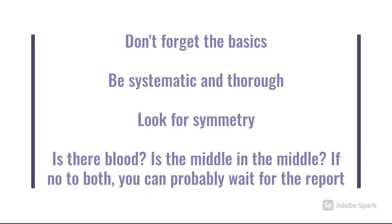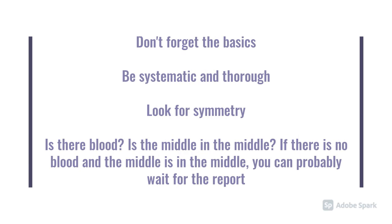To summarise, this was a rapid run-through of CT head interpretation. The key take-home messages are: don't forget the basics — make sure it's the right patient and the right scan. Look at the clinical details to target your interpretation. Be systematic, be thorough, be slow, be boring. Looking for symmetry is key — if something is asymmetrical, it will stand out. And even if you can't describe the pathology in great detail, it's important that you can detect it and highlight it to somebody better placed to interpret it. And finally, the key take-home message for F1s and F2s looking at CT scans: is there any blood, and is the middle in the middle?